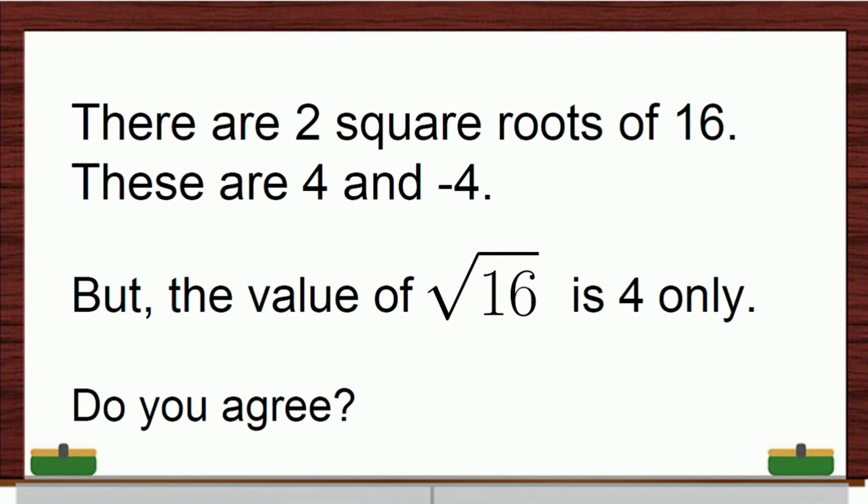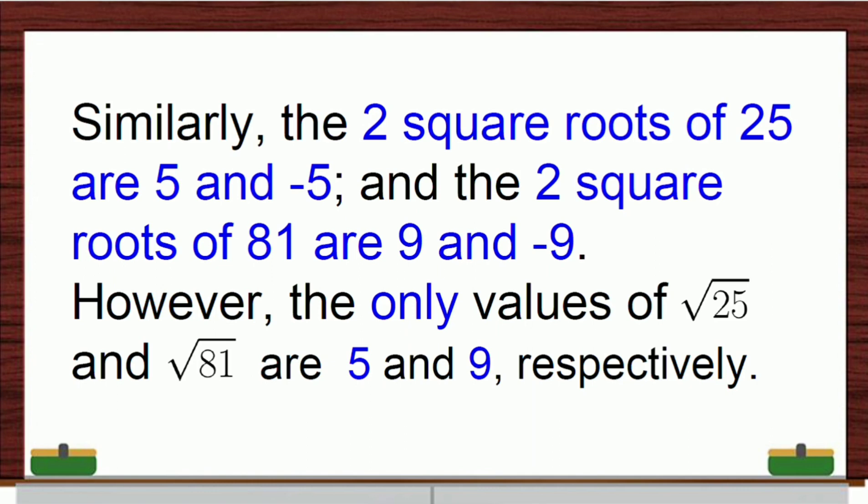But remember, there are two square roots of 16, and these are 4 and negative 4. But the value of the radical of 16 is 4 only. Do you agree? Similarly, the two square roots of 25 are 5 and negative 5. The two square roots of 81 are 9 and negative 9. But, again, the only values of the radical of 25, the radical of 81, are 5 and 9, respectively.